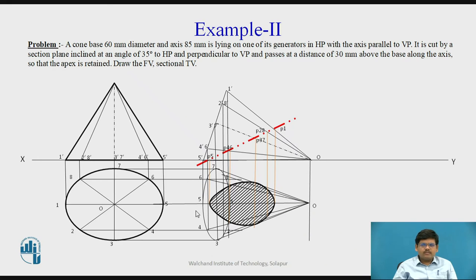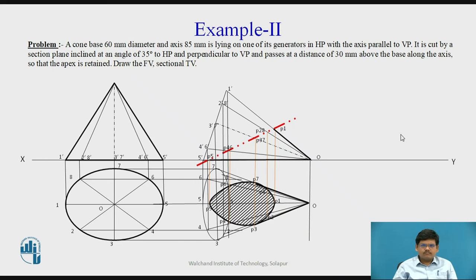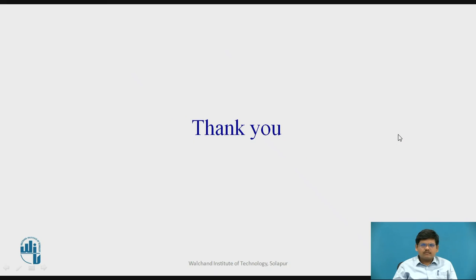We join the points together. For example, we have point P5 on O5 — we project it on O5. P1, P2, P3, P4 — all the points on the respective generators — and join all the points. This is the sectional view. We darken the remaining portion. Thank you.